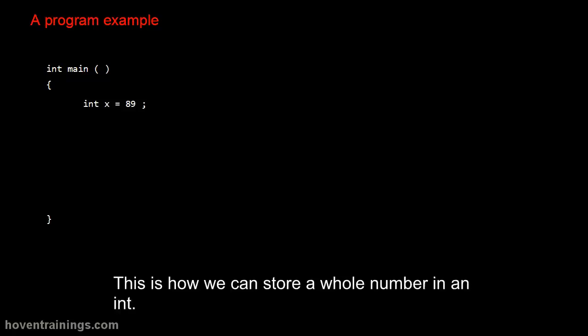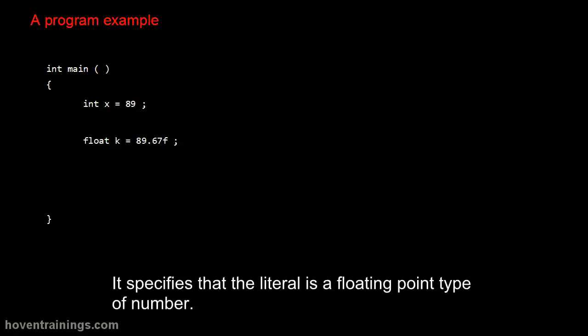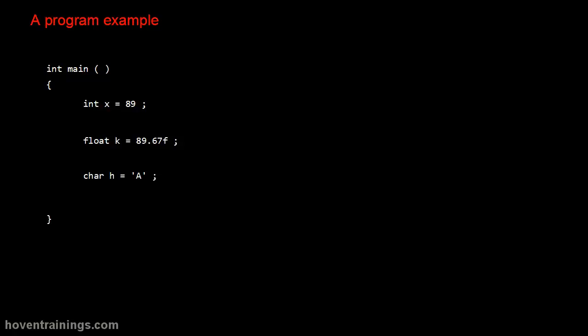Let's see an example with the help of a program. This is how we can store a whole number in an int. Here the variable k stores a floating point number. The suffix f is called a type specifier. It specifies that the literal is a floating point type of number. This variable stores the ASCII value of the literal 'a'.